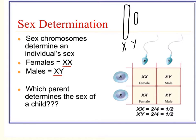Egg cells are always going to carry an X chromosome — which X chromosome is the question. Whereas 50% of sperm cells carry an X chromosome, the other 50% carry a Y chromosome. So which parent determines the sex of a child? That's right, the father — because whether you received an X chromosome or a Y chromosome determines if you are genetically male or female.